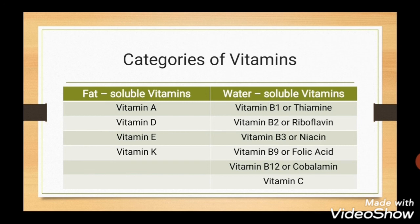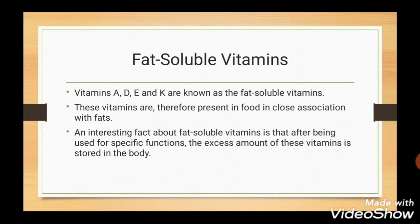Fat Soluble Vitamins include Vitamin A, D, E, and K. These vitamins are present in food in close relation with fats. After being used for specific functions, the excess amount of these vitamins is stored in the body. Water Soluble Vitamins include Vitamin B Complex, consisting of Vitamin B1, B2, B3, B9, B12, and Vitamin C.